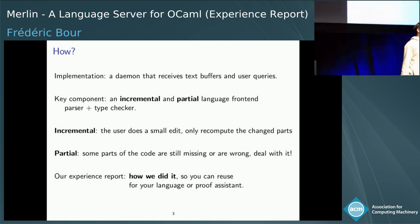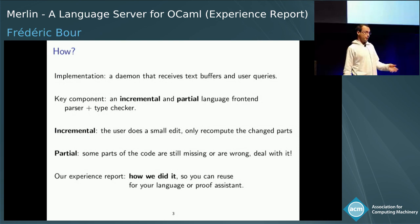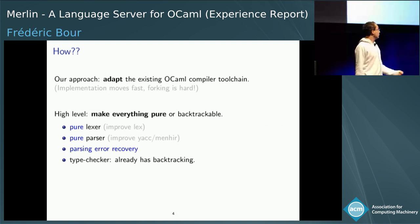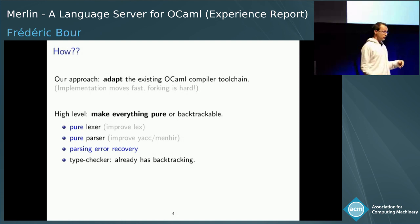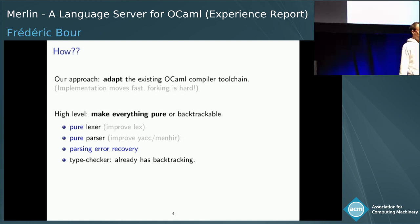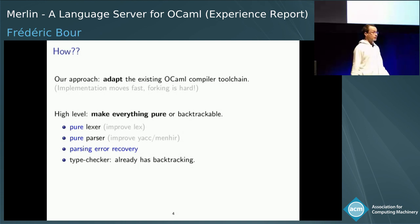In this experience report, we explain how we did that, the lessons we learned, and what you could reuse to implement a similar service for a programming language or proof assistant. We focused on OCaml. What we did is adapt the OCaml compiler front end. Because OCaml is a large language and moves fast, and we don't have resources to maintain a fork, we chose not to fork the OCaml compiler front end, but to adapt the tools used by it.